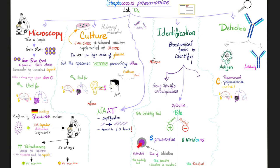You can see Streptococcus pneumoniae growing in purple, surrounded by an area that does not have Streptococcus pneumoniae — because the optochin killed it. This is called an inhibition zone, or zone of inhibition.